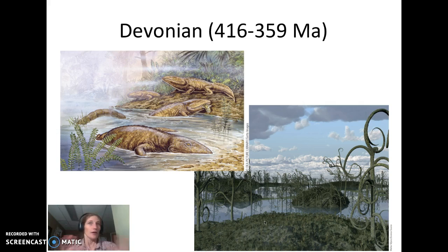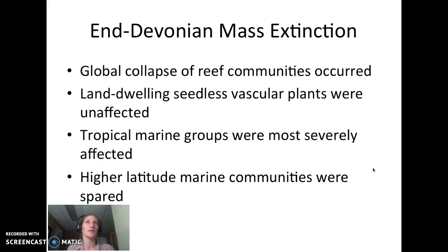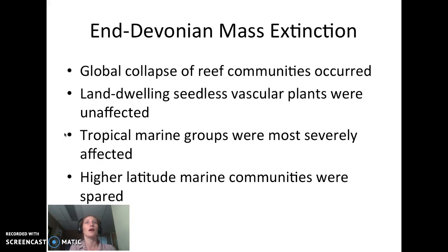The Devonian landscape showed some smaller plants and then towards the end of the Devonian plants got much taller. The Devonian ended with a mass extinction — a collapse of all reef communities globally. Land-dwelling seedless vascular plants were largely unaffected, while tropical marine groups were more severely affected. Communities towards the poles were not as affected, suggesting this was a period of global cooling. Marine organisms needing warm shallow seas couldn't survive, and populations began to decline while cool-tolerant organisms migrated toward higher latitudes.